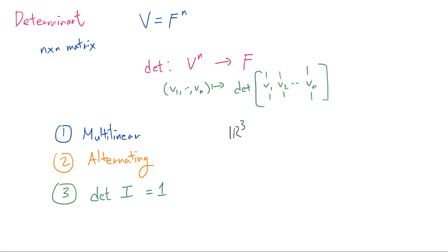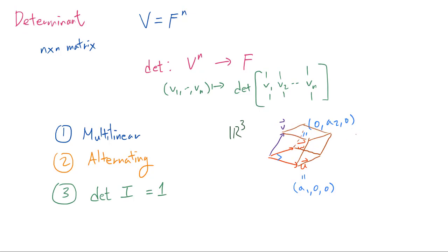To gain intuition, suppose we are in R3 with a linear map sending E1 to U = (a1, 0, 0), E2 to W = (0, a2, 0), and E3 to some vector V with a positive z-coordinate. Then U, W, and V form a parallelepiped, and by our geometric intuition the determinant of [U, W, V] should equal the volume of this parallelepiped—which is a1·a2·a3 if the height is a3, since the base has area a1·a2.